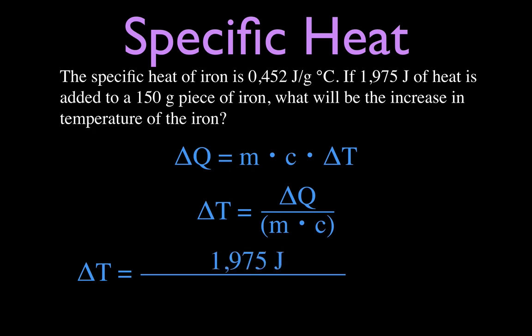But if we do that, we take the heat, which we said is 1975 joules, divide that by 150 times the specific heat, 0.452. And we get that that piece of iron with that much heat added to it would have a change in temperature of 19.1 degrees Celsius.